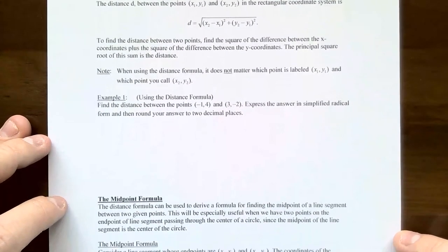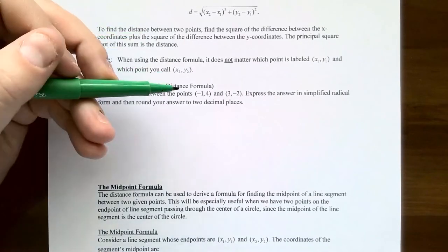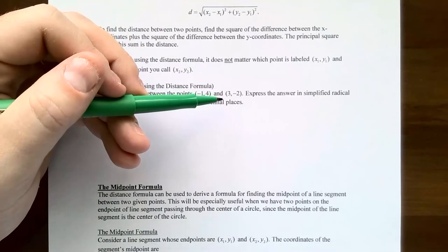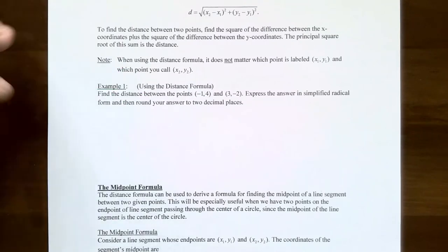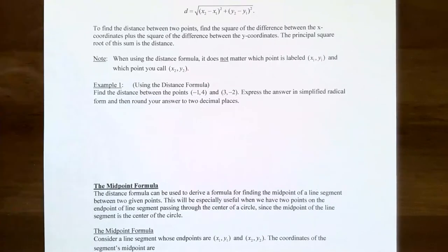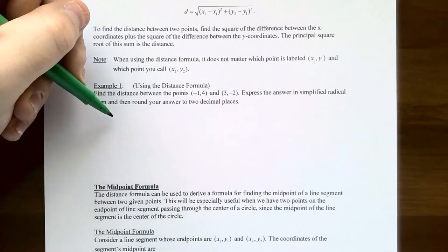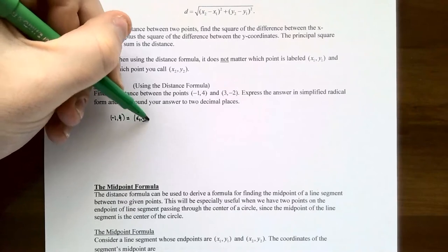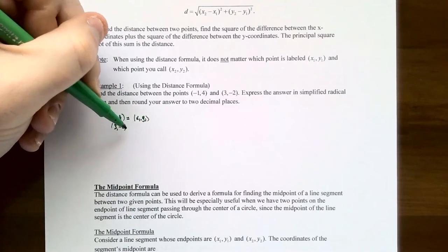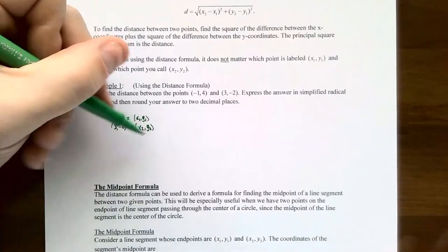So let's try out the distance formula. In example one, find the distance between the points (-1, 4) and (3, -2). Express your answer in simplified radical form, and also round your answer to two decimal places. I'm going to call (-1, 4) as x₁, y₁ and (3, -2) as x₂, y₂. And we want to find the distance between these two points.